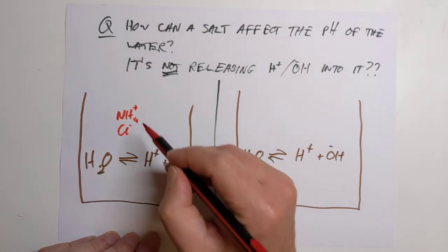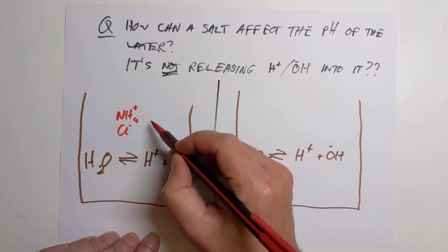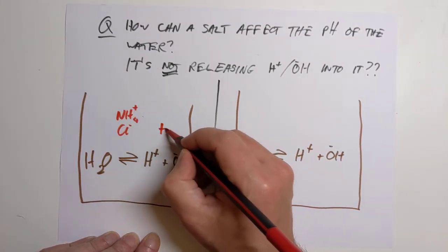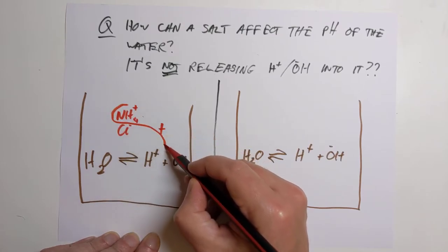So ammonium, positive charge, hydroxide, negative charge. These will indeed combine with each other. So ammonium and hydroxide will combine.